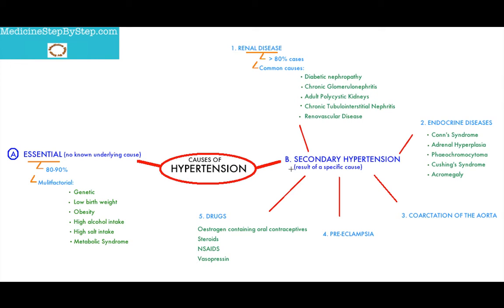Next, in secondary hypertension, there are endocrine diseases. The different endocrine diseases that can cause secondary hypertension are, as listed: Conn's syndrome, adrenal hyperplasia, pheochromocytoma, Cushing's syndrome, and acromegaly.